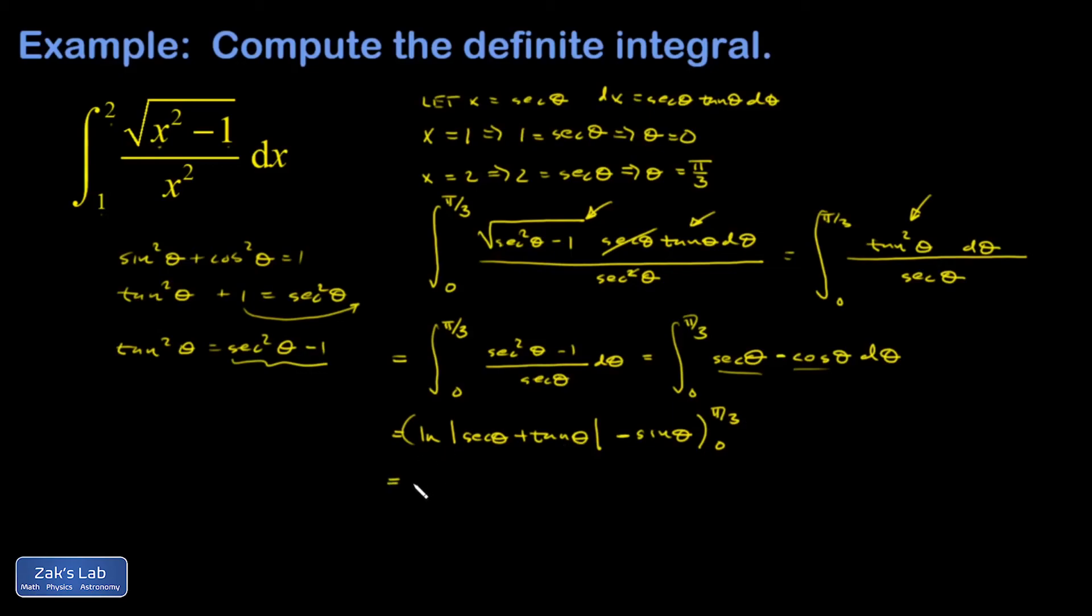So let's plug in the pi over three. Natural log absolute value secant pi over three. I'll hang on a second on evaluating these special angles. Plus tangent pi over three minus sine pi over three minus what I get when I plug in zero. So it's going to be natural log absolute value secant of zero plus tangent of zero minus sine of zero.